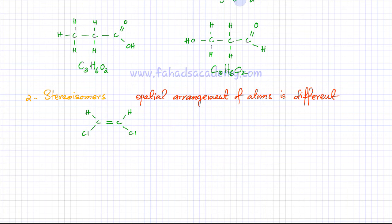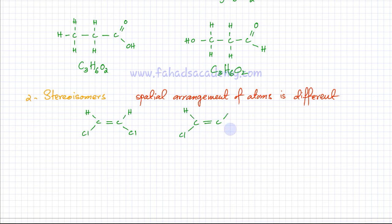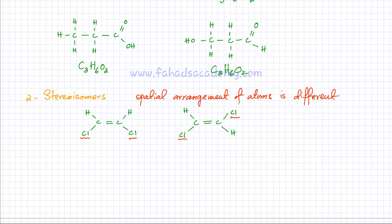A stereo isomer of dichloroethene has a different spatial arrangement without changing the connectivity. In another molecule of dichloroethene, hydrogen is pointing downwards and Cl is pointing upwards, whereas in the first both chlorines pointed in the same direction. The connectivity is exactly the same — chlorine is still attached to the same carbon — but the direction of the bonds is different. These are stereoisomers: same connectivity, different three-dimensional spatial arrangement. We'll cover this in much more detail in following videos.